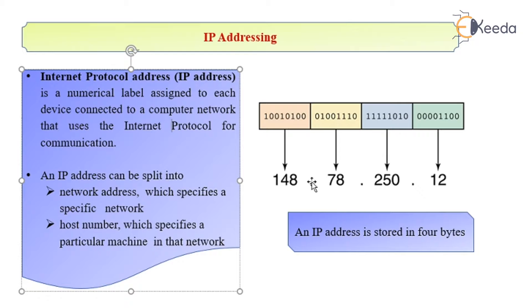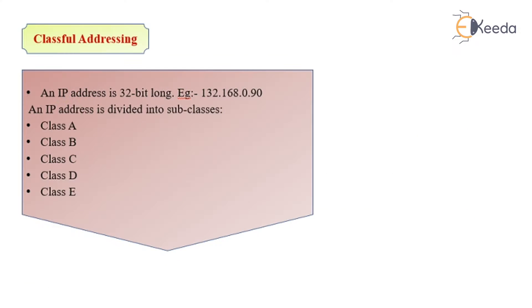This is the representation of an IP address. It is in the IPv4 format, which is a 32-bit addressing. Classful addressing divides IP addresses into five classes: A, B, C, D, and E.